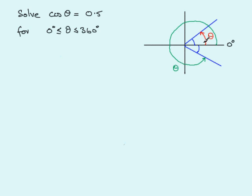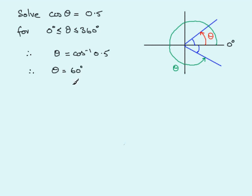I've got to work out the red theta and the green theta. To do that, I get my calculator and work out the inverse cosine of 0.5. Therefore theta equals the inverse cosine of 0.5 — this is a well known one — and the calculator tells us that theta equals 60 degrees.